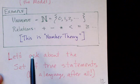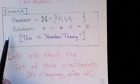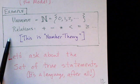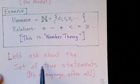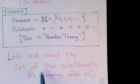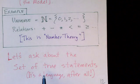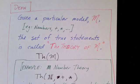And then we can ask about the set of true statements that we can make given this fixed model. This is a language after all—it's a set of formulas. Some are true and some are not. Which are true and which are not? It's a good question, and this is a problem that we can ask about. Which statements are true and which are not?